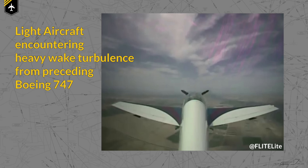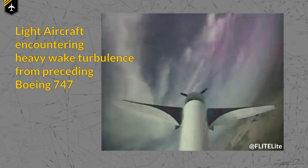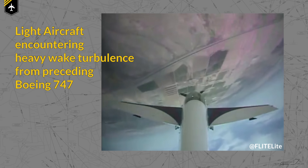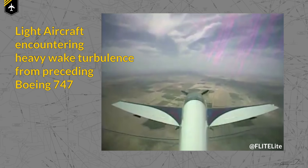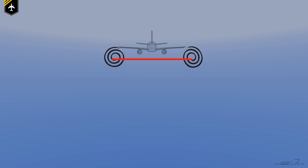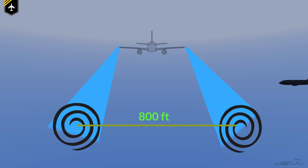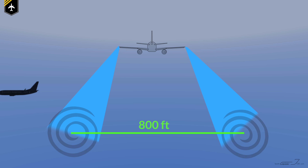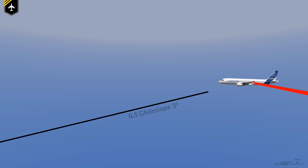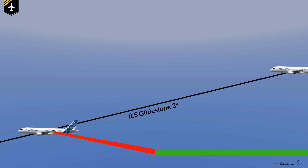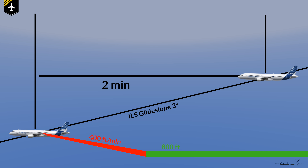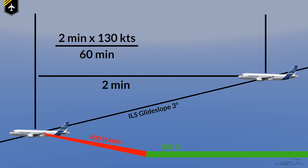Wake turbulence are a serious threat for the preceding plane. Nasty downdrafts and sudden excessive roll rates get the plane in an upset state — you do not want to experience that on short final as a pilot or as a passenger. Numerous tests have shown that wing tip vortices have an estimated sink rate of 400 feet per minute, and come to rest at 800 feet below the airplane's flight path, where it is considered safe to fly across the dissipating wake. Let's determine the minimum separation needed between two Airbus A320s: we need two minutes — the time it takes for the wake to descend 800 feet — and two minutes at an average approach speed of 130 knots results in 4.3 nautical miles minimum separation distance.